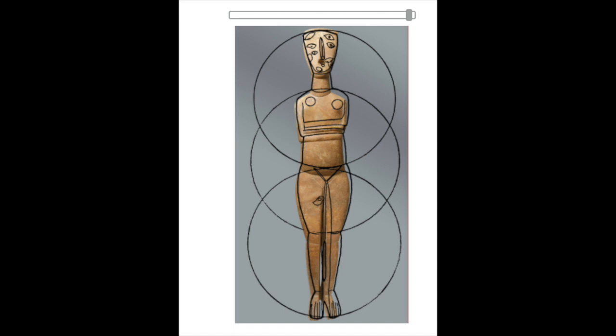Some of these sculptures had eyes on the bellies, and they think that might have been about pregnancy. One of the reasons there was such a market for these things not too long ago is because of their minimalistic tendencies. All of the body parts are pared down to essentials, and some joints are just indicated with incised lines. They were carefully designed using a compass to create three evenly spaced and equally sized circles, as this diagram shows.